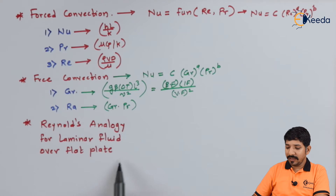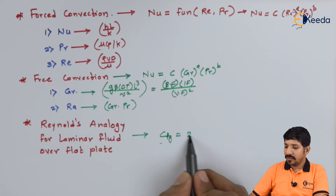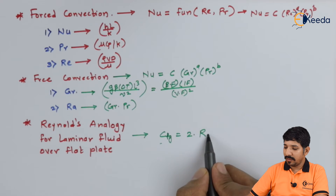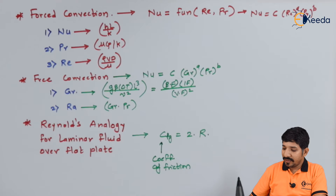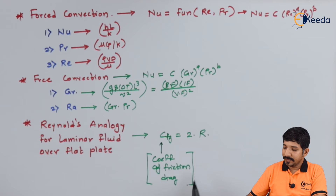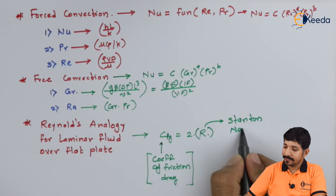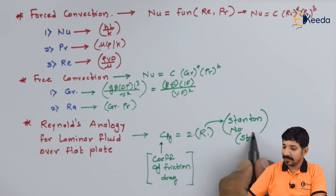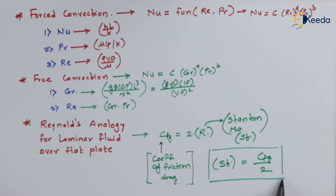We then covered the Reynolds analogy, which relates the coefficient of friction drag (CFD) to the Stanton number. The Reynolds analogy states that CFD equals twice the Stanton number, or equivalently, Stanton number equals CFD divided by 2. This establishes the relationship between the coefficient of friction drag (or shear stress in the flow) and the Stanton number.